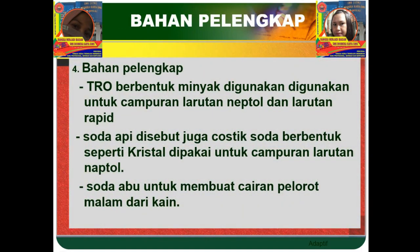Untuk bahan pelengkap, bahan pelengkapnya itu adalah TRO, berbentuk minyak, digunakan untuk campuran larutan naftal dan larutan kronkit. Kemudian soda abu, disebut juga plastik, berbentuk seperti kristal, dipakai untuk campuran larutan naftal. Soda abu juga digunakan untuk membuat cairan korot malam dari kain.